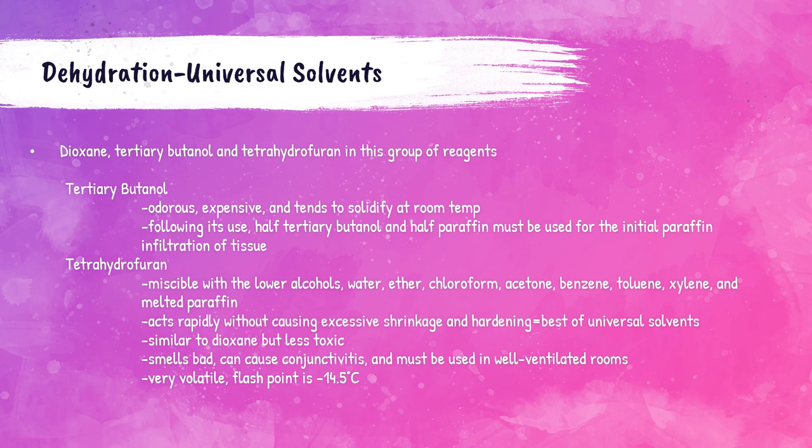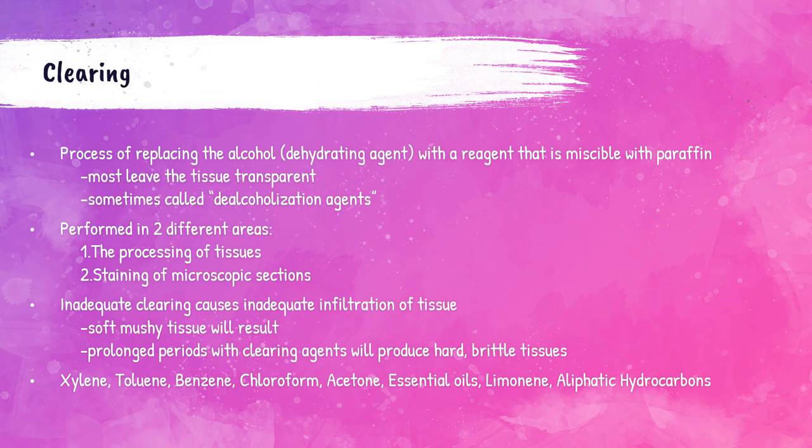Tetrahydrofuran acts quickly and does not cause a lot of shrinkage and hardening of the tissue. It is less toxic than dioxane and has an OSHA PEL of 200 parts per million. However, it is very volatile — it vaporizes easily — and must be used in a well-ventilated room due to being known to cause irritation to the eyes.